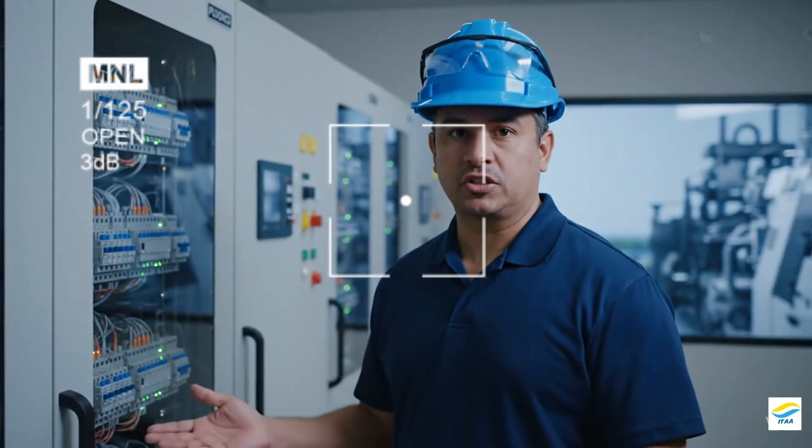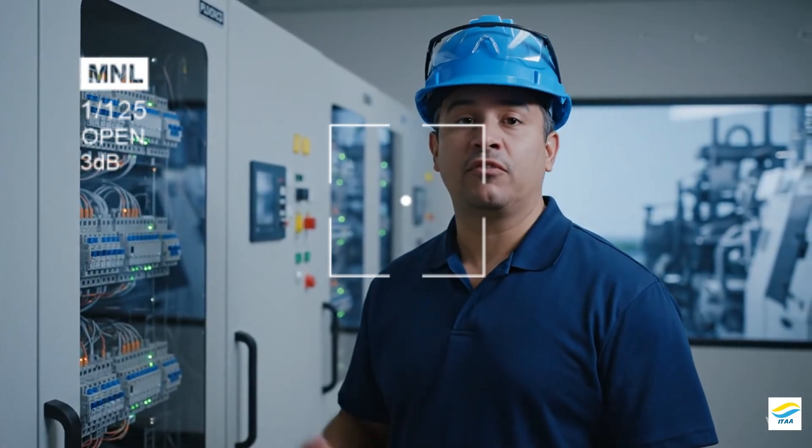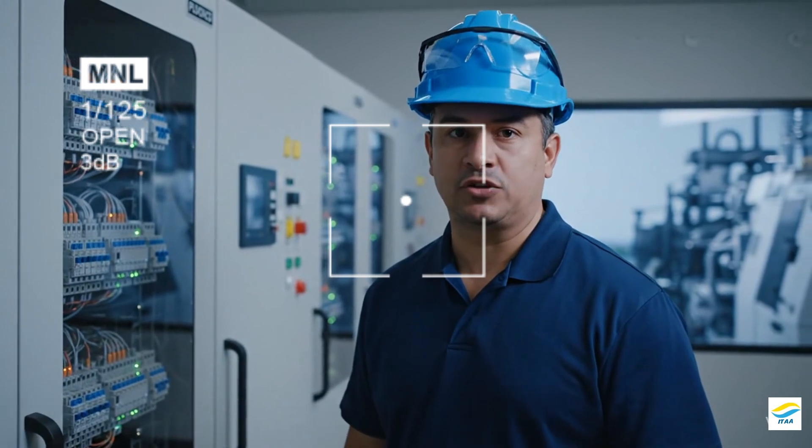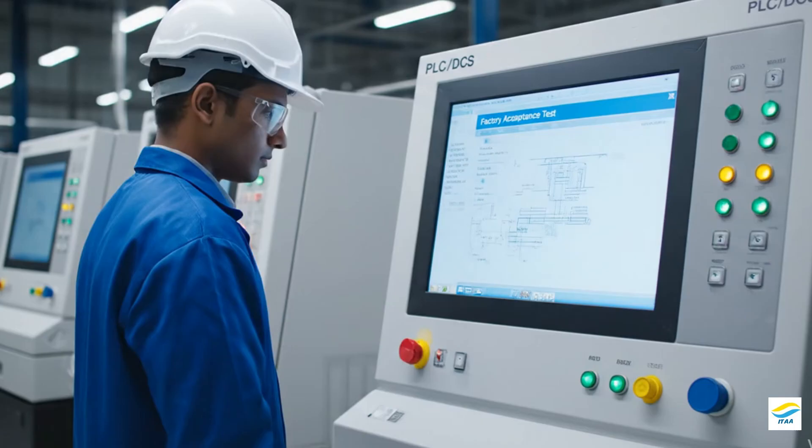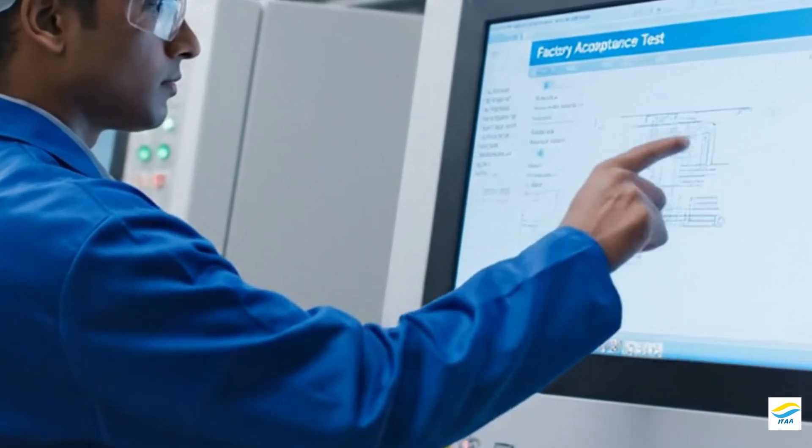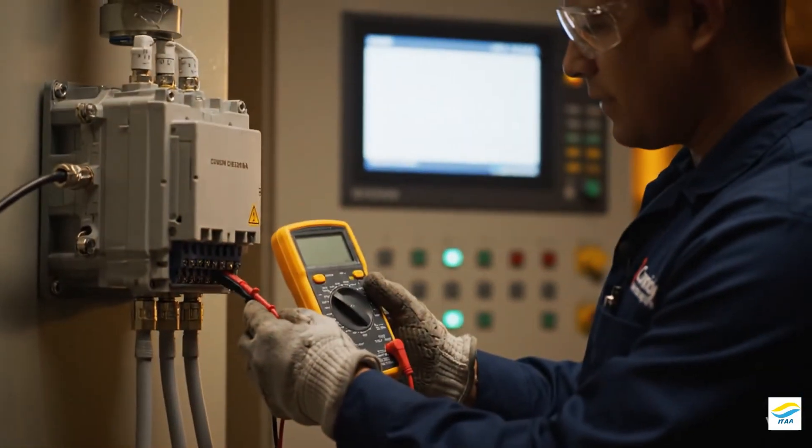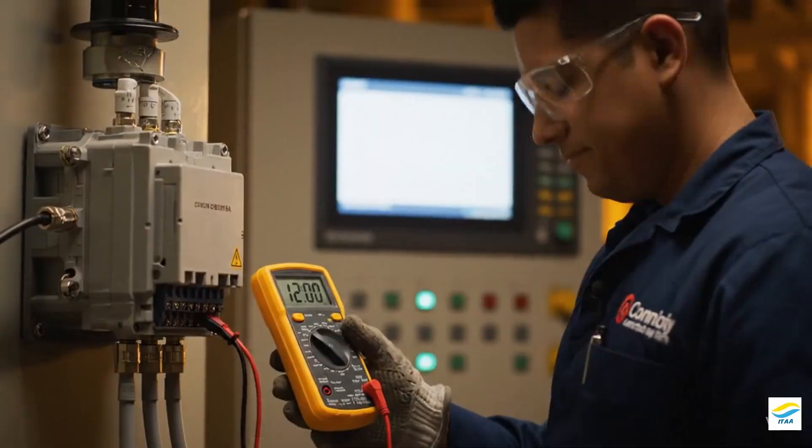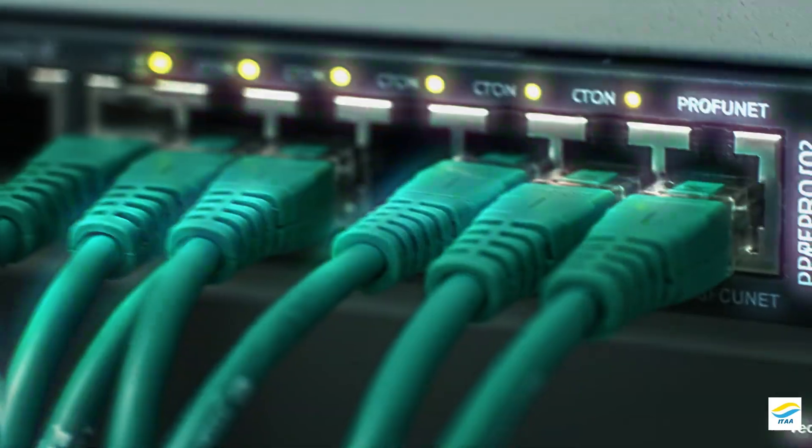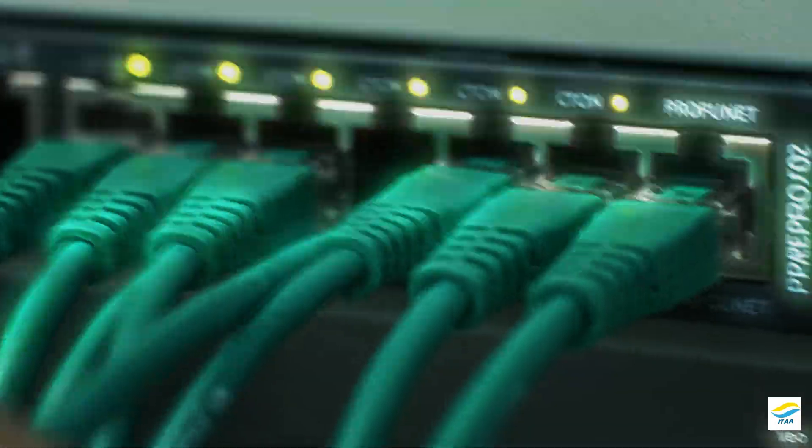What exactly is operational technology and how does it differ from information technology at Teashert? That's a great place to start. In simple terms, OT is the technology that controls the physical world, whereas IT is focused on data and information processing.